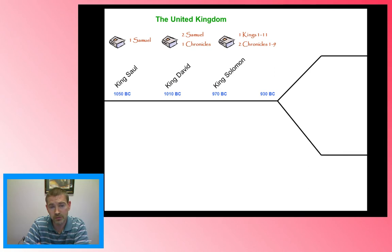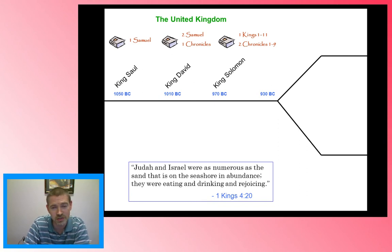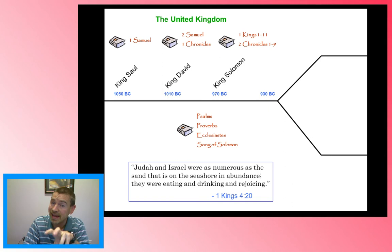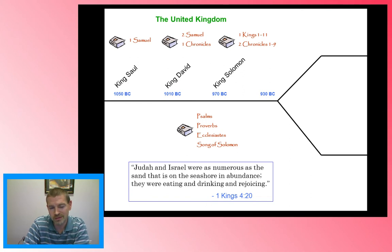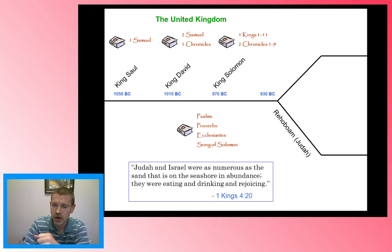We often call this the Golden Age of Israel. Here's a great quote: 'Judah and Israel were as numerous as the sand that is on the seashore in abundance. They were eating and drinking and rejoicing.' You can see God's great blessing on them during this united kingdom. They also wrote psalms — many of the psalms were written then. Solomon wrote many of the Proverbs, the book of Ecclesiastes, and the Song of Solomon. Much of the Hebrew poetry was written during this time period, though some of it came later as well.